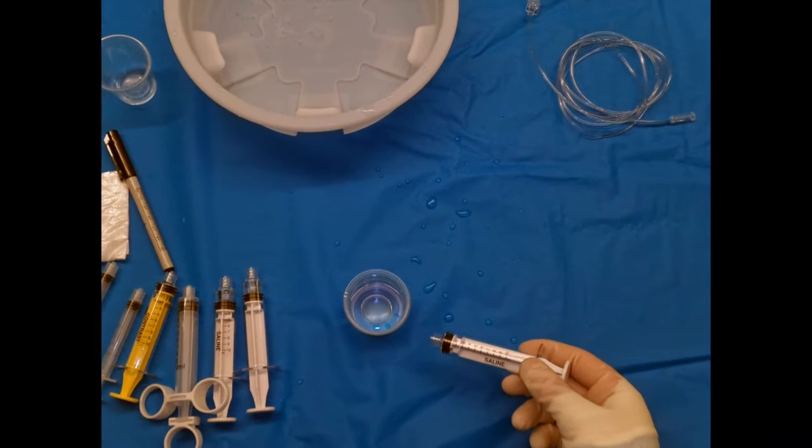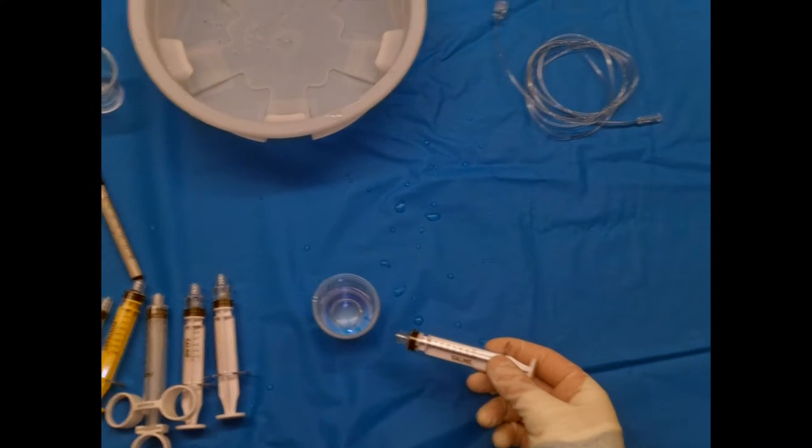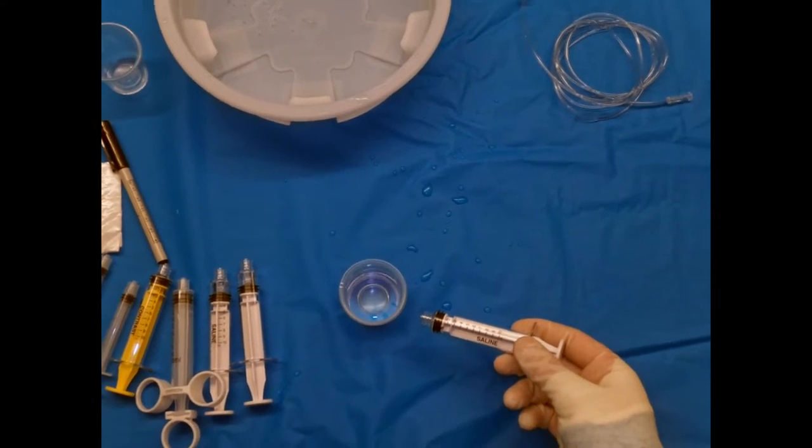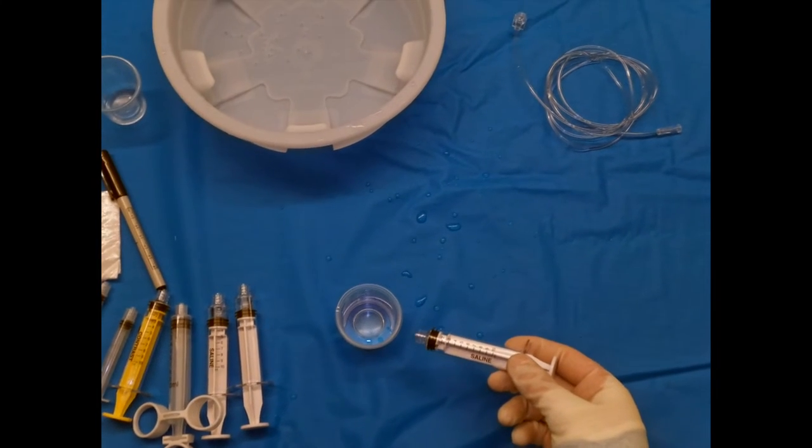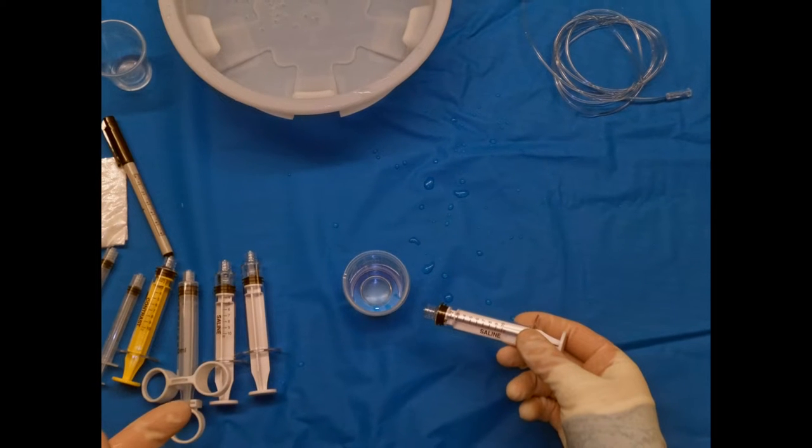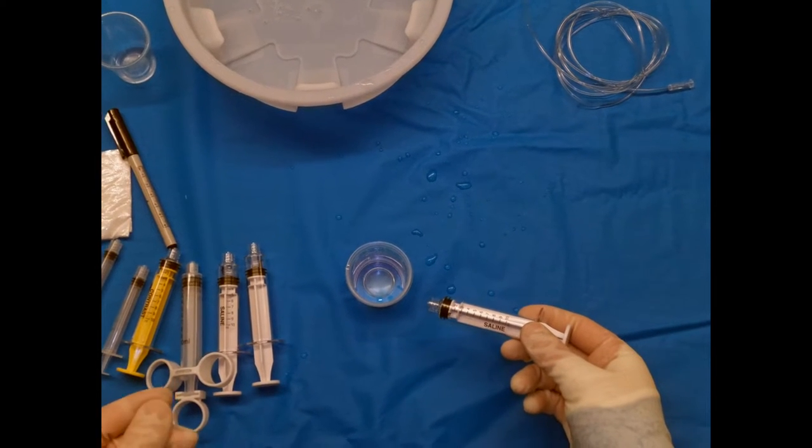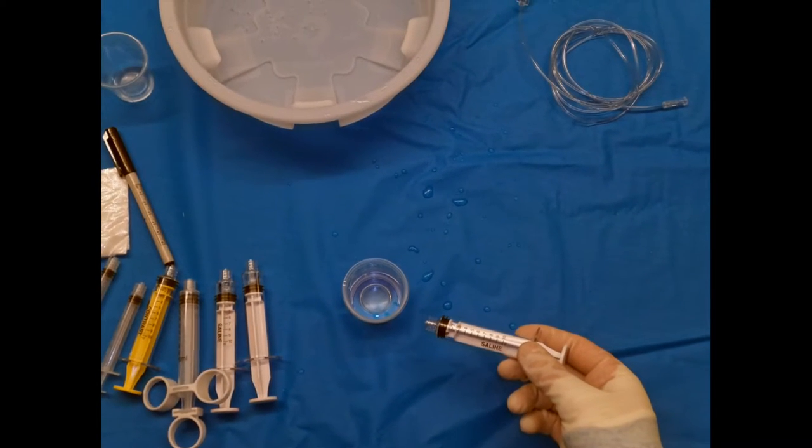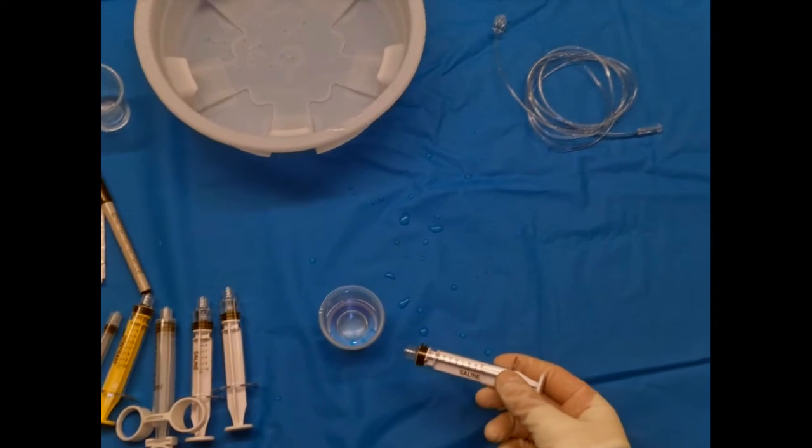The base principle here when you're drawing up anything in neuro-IR is that you don't want to introduce any air. Any air that is introduced you want to get out, and you always want to leave room for you to pull back on the syringe to remove air from a second system that you're working with.